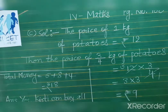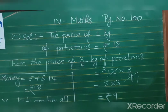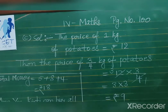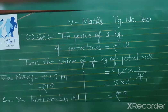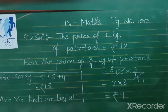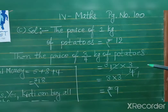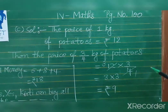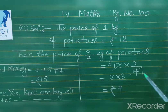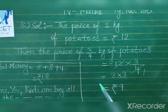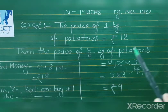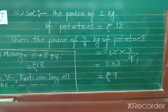Question C: The price of 1 kg of potatoes is rupees 12. The price of three-fourths kg of potatoes is equal to 12 into 3 by 4. So 12 divided by 4 equals 3, then 3 into 3 equals 9. The price of three-fourths kg of potatoes is equal to rupees 9.